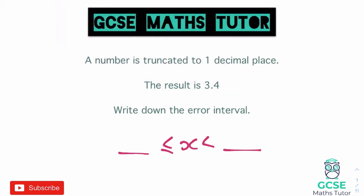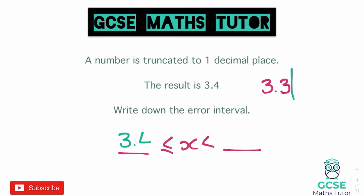Let's think about what happens if we went lower than 3.4. What if it was 3.3, or 3.3 with lots of nines — and imagine those nines just keep on going? Well, even with that number, if we truncate it — which is just chopping it off after the first decimal — all those nines disappear. It doesn't matter that it's super close to four, because they would just be gone, and it would just be 3.3. So there is no number in existence that starts with 3.3 that would ever truncate to 3.4. For that reason, the lowest it could possibly be is 3.4 exactly. The number given in the question, when it comes to truncation, is going to be our smallest possible value.